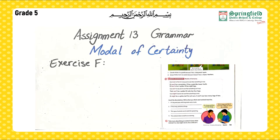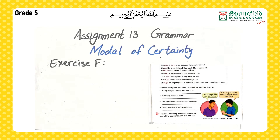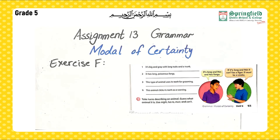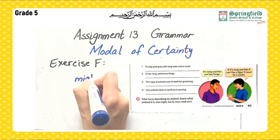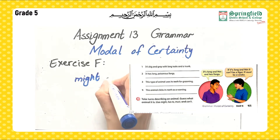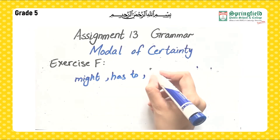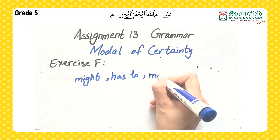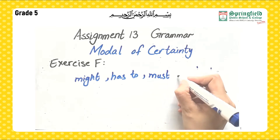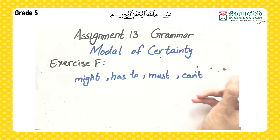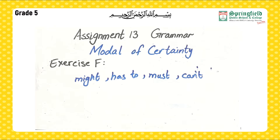Exercise F: Take turns to describe an animal and guess which animal it is. Use 'might,' 'has to,' 'must,' and 'can't' while describing the animal.